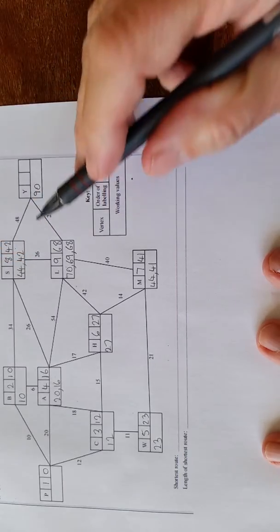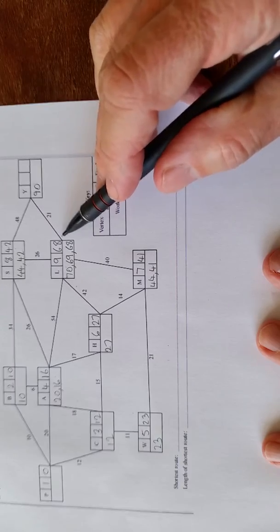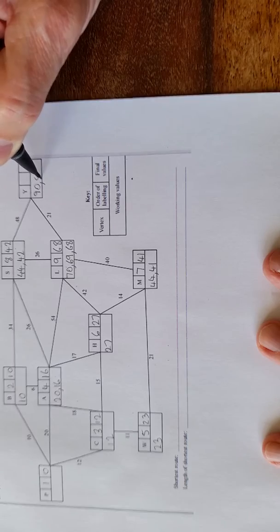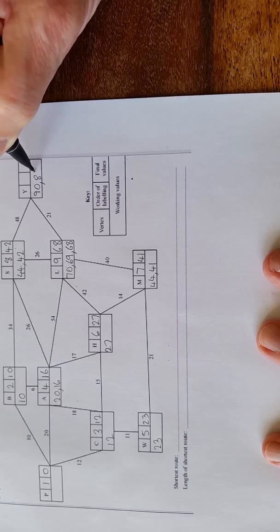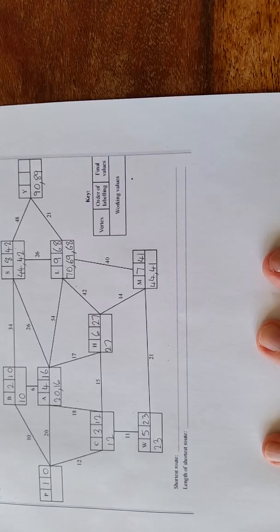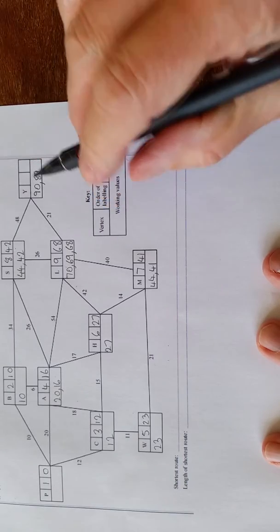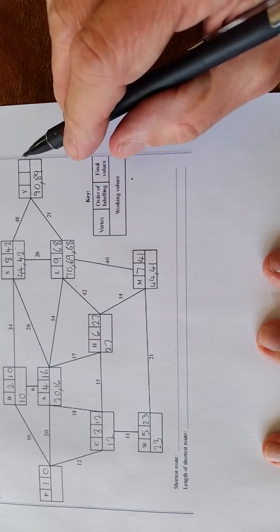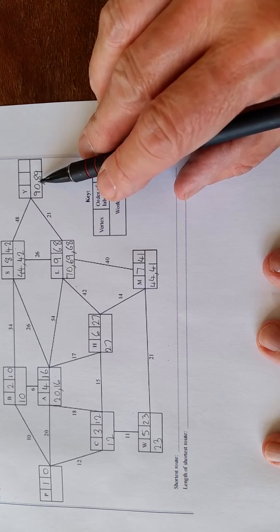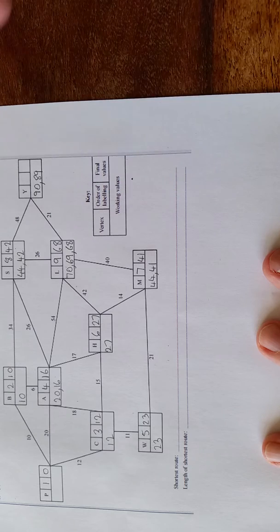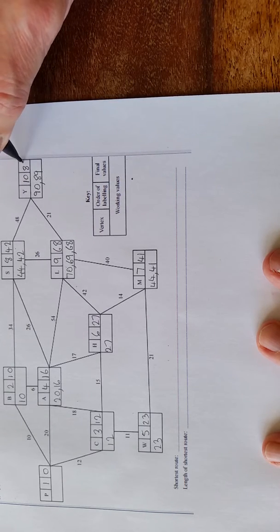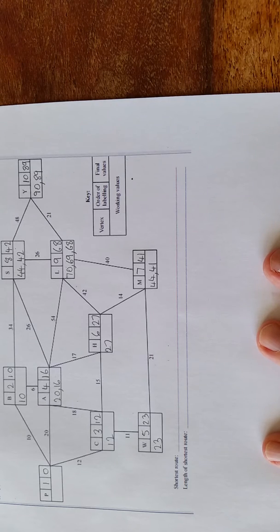So we've got this one. 68 add 21 is 89, which is shorter. This was the last one chosen, it's the only temporary value that's left. So it's the tenth one, and there becomes 89. And that's it finished for that part.